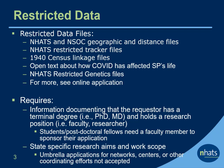Restricted files available through the MCTA Enclave include, for example, NHATS and NSOC Geographic and Distance Files, NHATS Restricted Tracker Files, the 1940 Census Linkage Files, Open Text About How COVID Affected the SP's Life, and NHATS Restricted Genetics Files. For a complete listing, see the online application. This video focuses on applying for all files in the repository except the NHATS Restricted Genetics Files, which requires a separate application process.